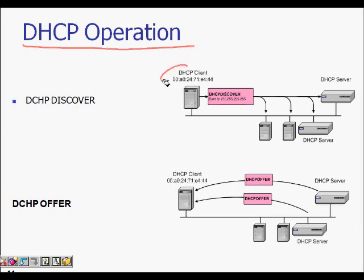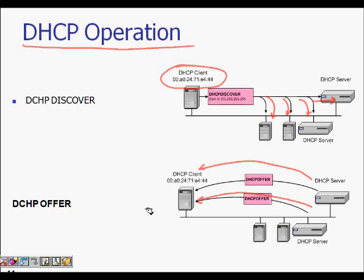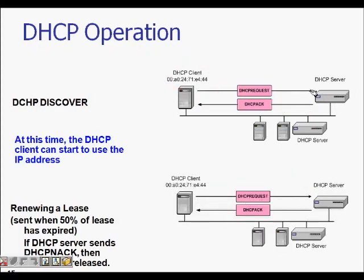In summary of the message flow: the DHCP client with a MAC address sends a Discover broadcast to all machines including both DHCP servers. Both servers respond with an Offer containing proposed IP addresses. The client then sends a DHCP Request broadcast indicating which server's offer it accepts. The unchosen server sees it was not selected; the chosen server sends a DHCP ACK confirming the IP address assignment.